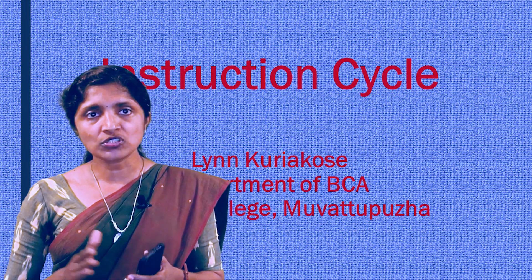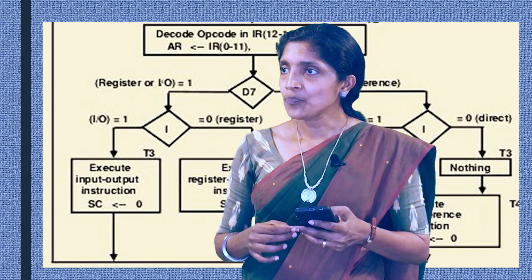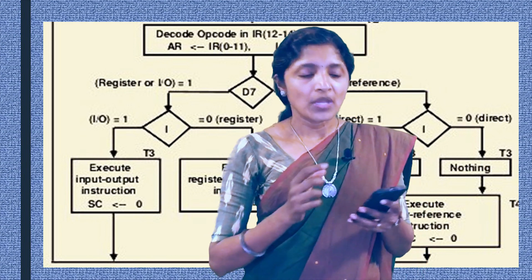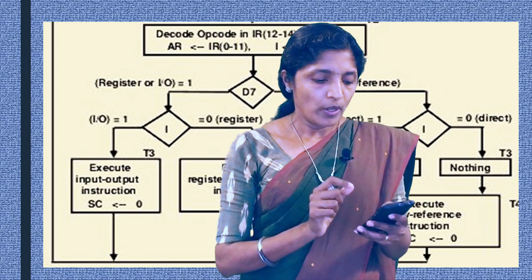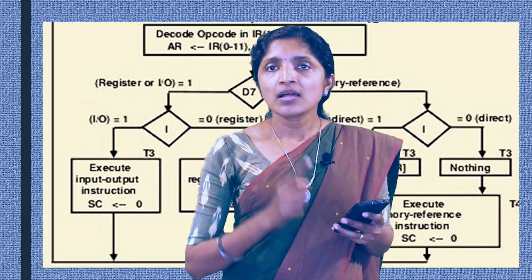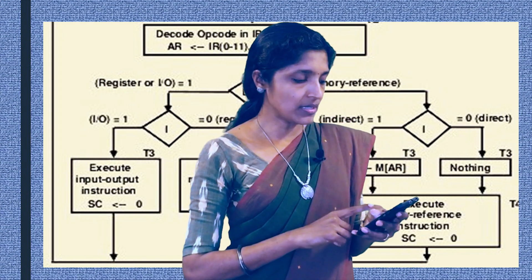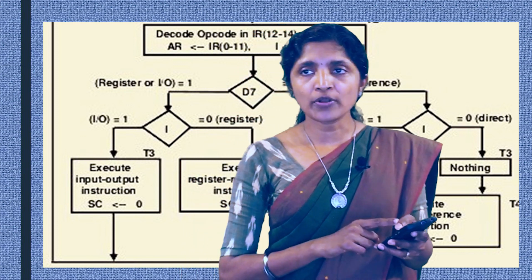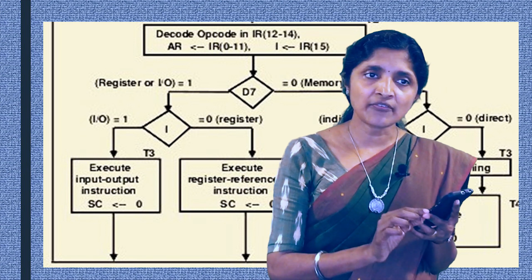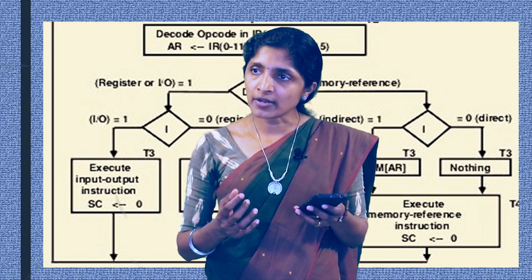Now let's see a flowchart of the decoding process. The opcode bits are transferred to a decoder, and the output of the decoder is used to analyze the type of instructions. In this flowchart, we can see the D7 output. When the D7 output is 0, we determine that it is a memory reference instruction. When the D7 output is 1, we decide that it is a register reference or input-output reference instruction. So when the opcode is 1-1-1, we specify that it is a register reference or input-output instruction. For all other combinations of opcode, we determine that it is a memory reference instruction.